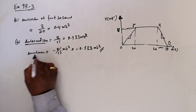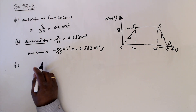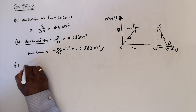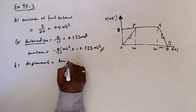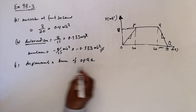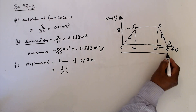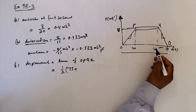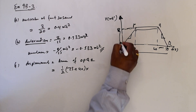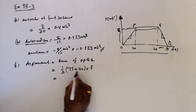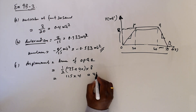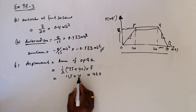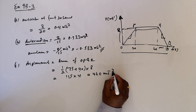Deceleration removes the negative sign. For part c, the displacement from the starting point to t equals 75 seconds — we need to find the area of trapezium OPQR. It is half times (75 plus 40) times perpendicular height 8. That gives 75 plus 40 equals 115, times 4 equals 460 meters.